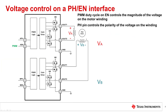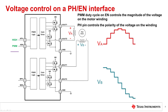Voltage control is a method of driving the stepper motor without using current chopping. To do this on a phase enable interface, a PWM signal with a sinusoidal duty cycle on the EN pin controls the magnitude of the voltage on the motor terminals. To recreate the whole sine wave, the phase pin must switch its state halfway through the sine wave to change the polarity of the voltage applied to the motor terminals. This example only shows the inputs for the A phase. The B phase control is similar, but the sinusoidal PWM signal on the inputs needs to be 90 degrees out of phase with the A phase.